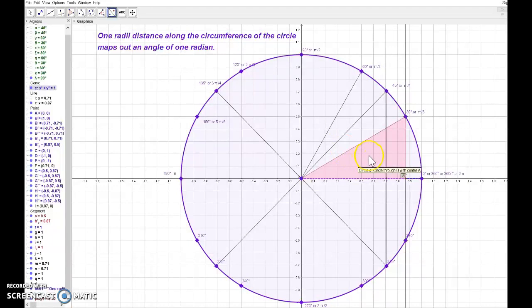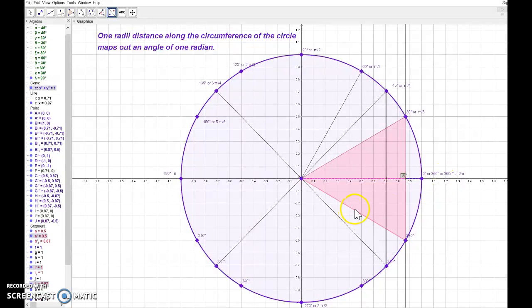We're going to reflect the triangle. I'm going to choose it down here, over the x-axis, and there it is. This is why we call it a reference angle.